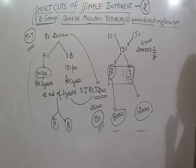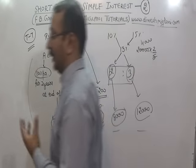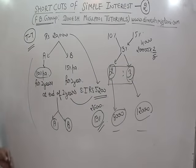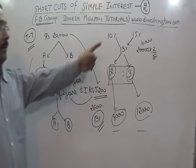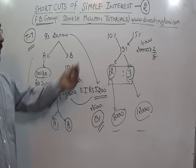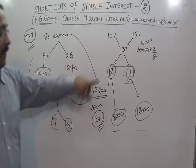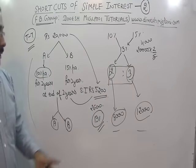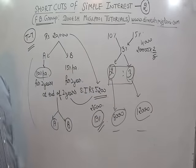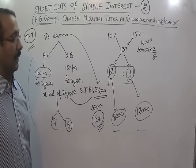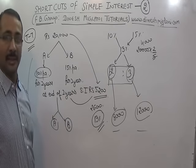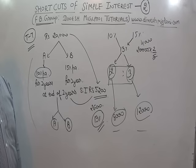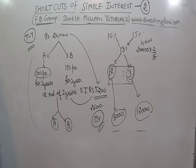To summarize trick number seven: find the average rate of interest from the combined data. A's rate is 10%, B's rate is 15%, and the combined average is 13%. Apply allegation: 13 − 10 = 3 on B's side and 15 − 13 = 2 on A's side, giving ratio 2:3. Dividing rupees 20,000 in ratio 2:3, A gets 8,000 and B gets 12,000. A very important question with a very simple trick.